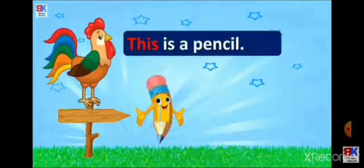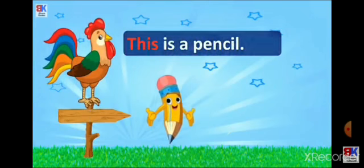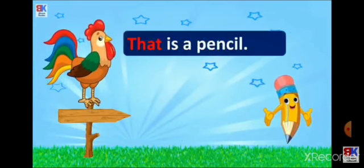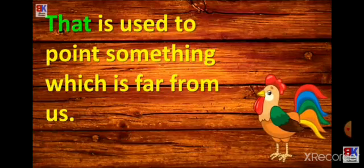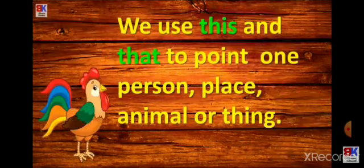Let's look at different examples to understand the use of 'this' and 'that'. 'This is a pencil' — it is near. Now the pencil goes far away, so: 'That is a pencil'. When things are far away, use 'that'. 'This' is used to point to something near to us, and 'that' is used to point to something far from us. We use 'this' and 'that' to point to one person, place, animal, or thing.